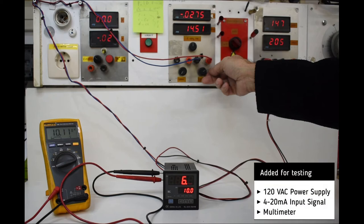For the testing of the second controller, we add a 4-20mA input signal, a 120V AC power supply, and a multimeter in order to measure the mA output.